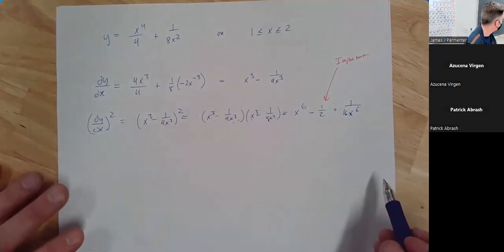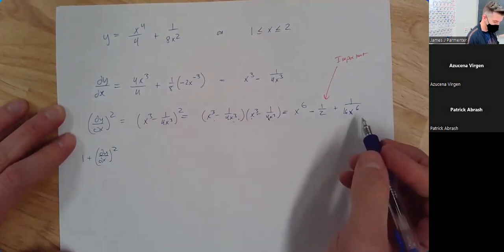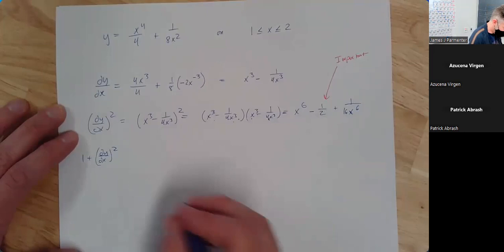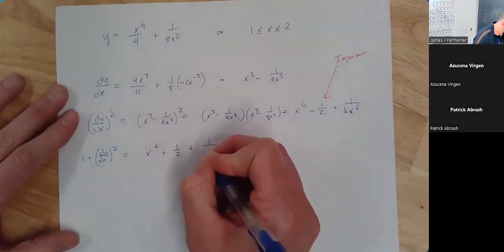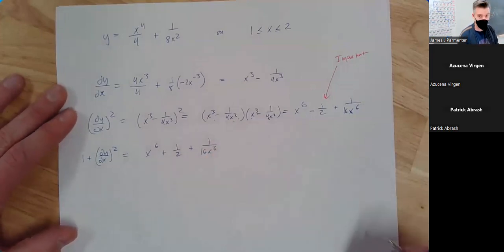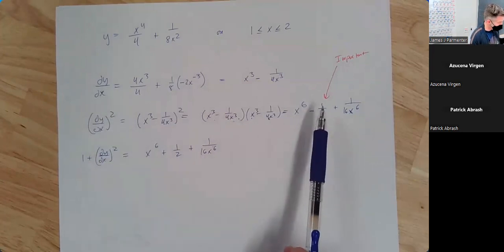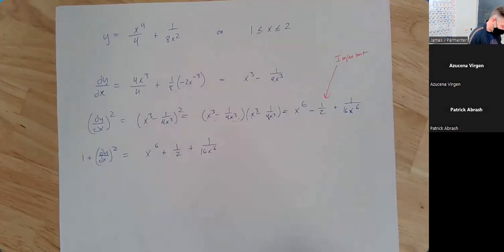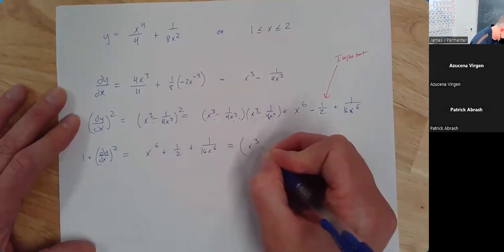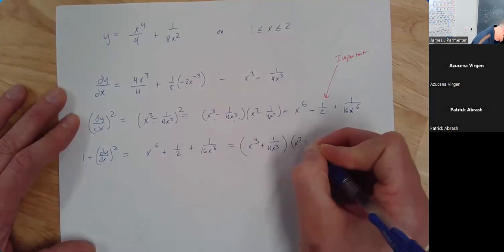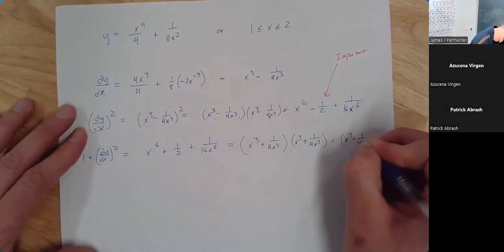Here's the whole thing: when you add 1 to this expression, instead of negative 1/2 you get positive 1/2. So 1 plus (dy/dx)² equals x⁶ + 1/2 + 1/(16x⁶), and this factors super nicely as (x³ + 1/(4x³))². When you have something like this it is almost for sure going to be the case that when you take the derivative and square it, the middle term is going to be negative 1/2. Then when you add 1, the middle term changes sign to positive 1/2, and it refactors the same way.